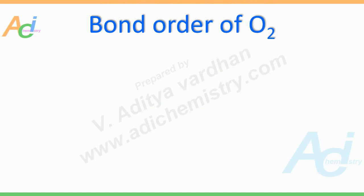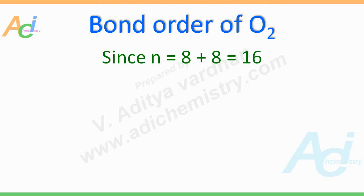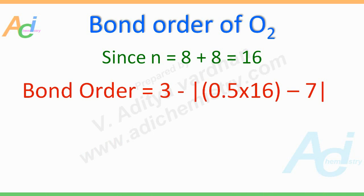Let us see a few examples. I am going to show you how to get bond order very quickly for oxygen — the dioxygen molecule. There are two oxygen atoms, and the atomic number of oxygen is 8, so in one oxygen atom there are 8 electrons. As there are two oxygens, the total number of electrons is 8 plus 8, that is 16. Just plug in this value into the formula: 3 minus modulus of 0.5 into 16 minus 7. That is simply 3 minus 1, which equals 2. So the bond order of the dioxygen molecule is 2.